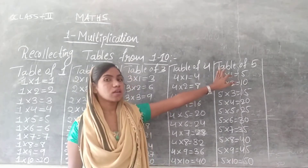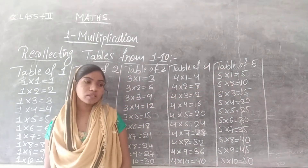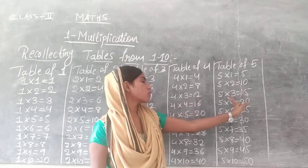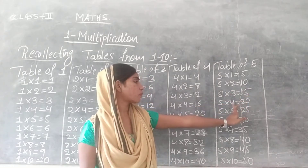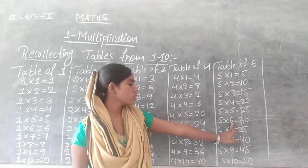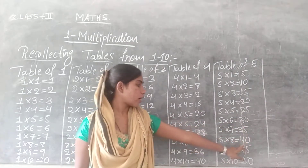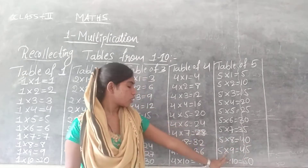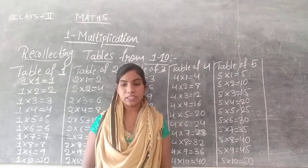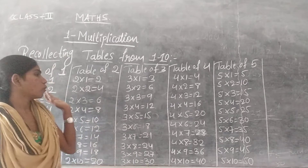And the next one is the table of 5. 5 1s are 5, 5 2s are 10, 5 3s are 15, 5 4s are 20, 5 5s are 25, 5 6s are 30, 5 7s are 35, 5 8s are 40, 5 9s are 45, 5 10s are 50.